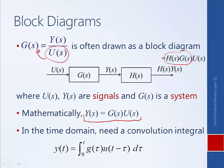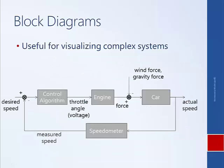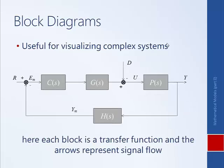Multiplying two transfer functions is much simpler than performing a bunch of convolution integrals. We've seen block diagrams previously when we first introduced the structure of a control system. They are useful for visualizing very complex systems with lots of components, inputs, and outputs. Each block can be represented as a transfer function, each arrow represents signal flow, and we can see how nicely individual subsystems combine into one large system model.